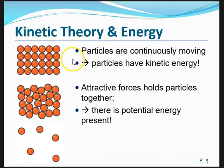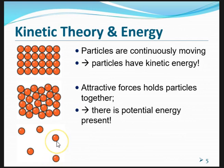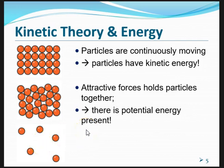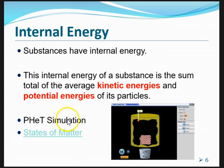In short, since each and every single particle is always moving — whether in solid, liquid, or gas state — all these particles must have kinetic energy. The kinetic energy of matter in the gas state would be the highest because they are able to move freely and very quickly. For every single one of these particles, they are affected by the forces of attraction, meaning there will always be potential energy present between the particles as well. As we move from solid to liquid and to gas, as the forces of attraction become weaker, the potential energy between these particles will also increase. Hence, when we say that all substances have internal energy, we now know that the internal energy of a substance is the sum of the average kinetic energies and potential energies of all its particles.